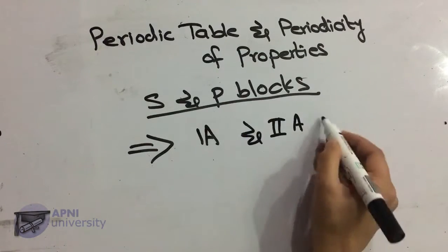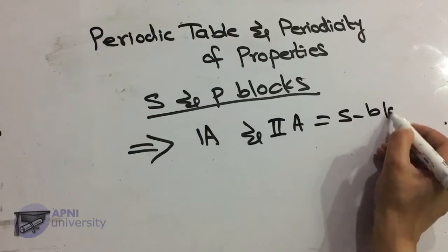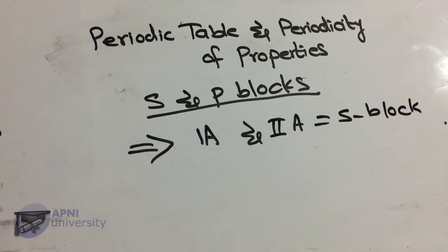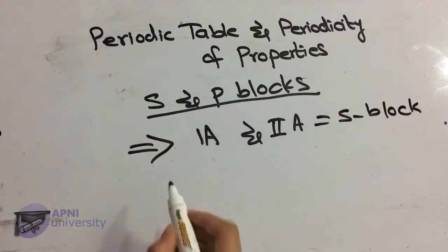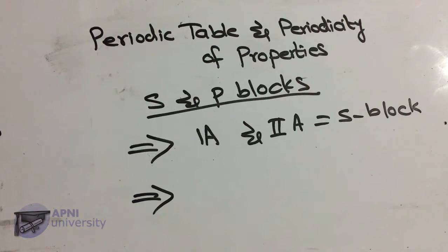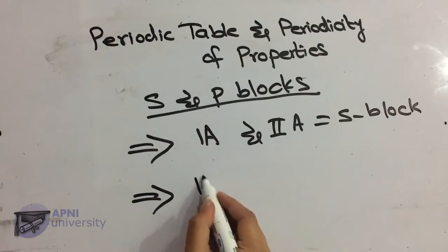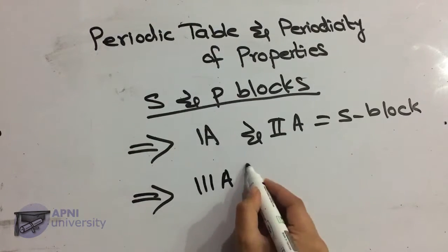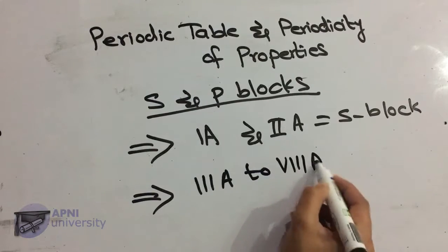Valence shell ke according hum elements ko different categories mein classify karte hain. Group 1A aur group 2A ke elements mein valence electrons s sub-shell mein present hain, isliye ye s-block elements kehlate hain. Isi tarah group 3A se 8A tak ke elements, except helium, p-block elements kehlate hain kyunke unke valence electrons p sub-shell mein hote hain.